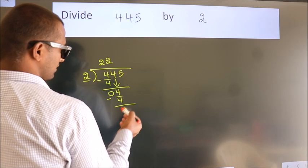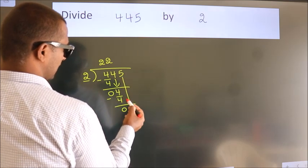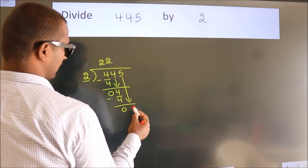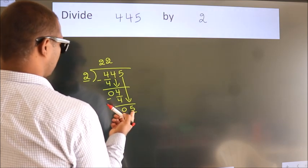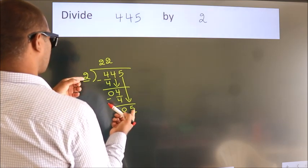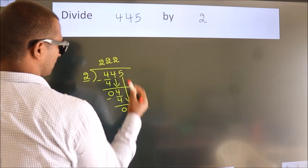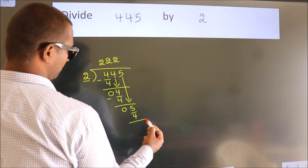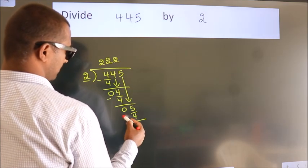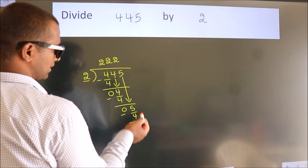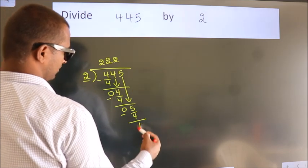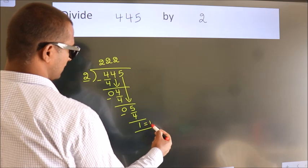After this, bring down the beside number, so 5 down. A number close to 5 in 2 table is 2 twos, 4. Now we subtract, we get 1. No more numbers to bring down. So we stop here. This is our remainder. This is our quotient.